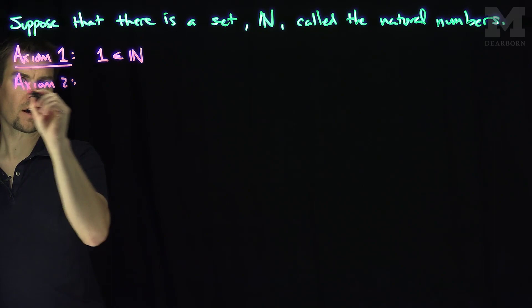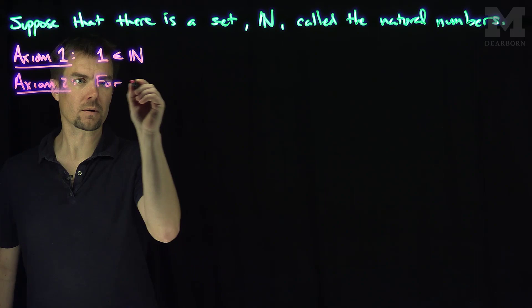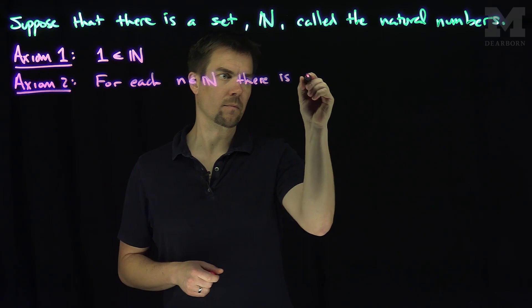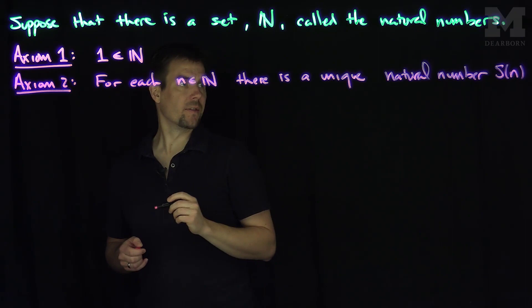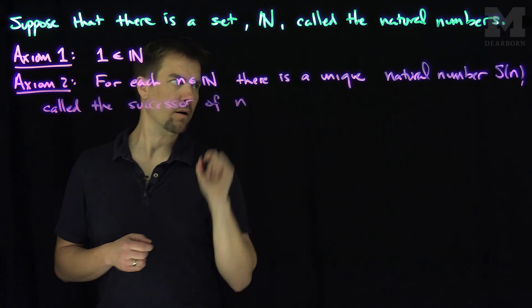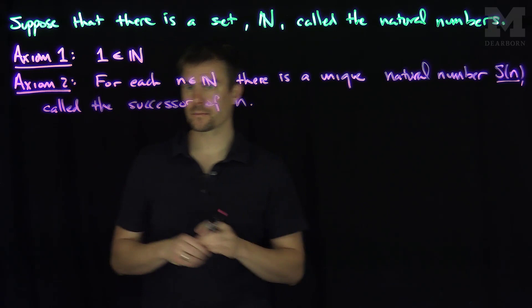The second axiom helps define further numbers in the set. For each n in N, each natural number, there is a unique natural number S(n) called the successor of n. This successor plays a very important role in the construction process. Every natural number has a successor which is still a natural number.